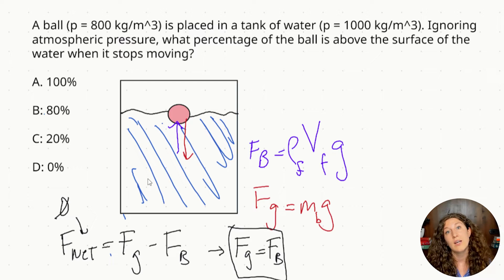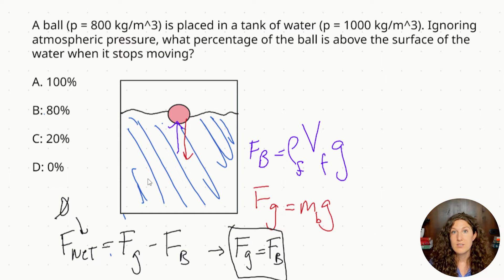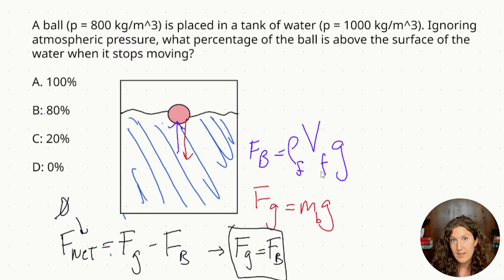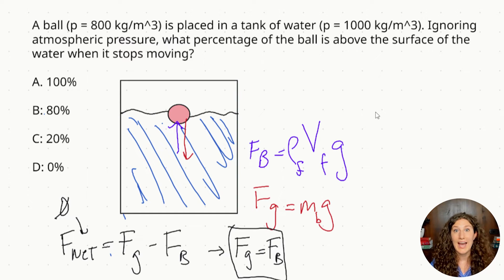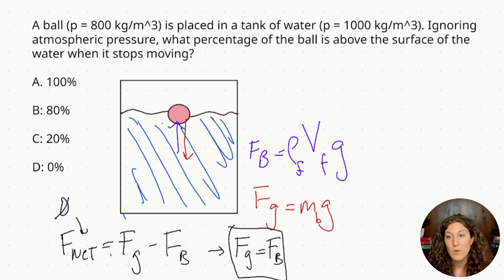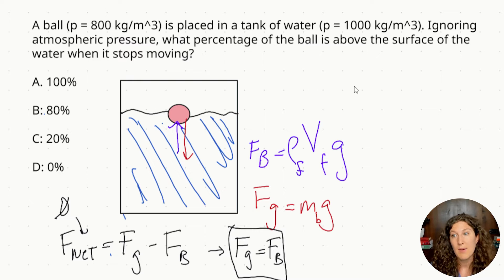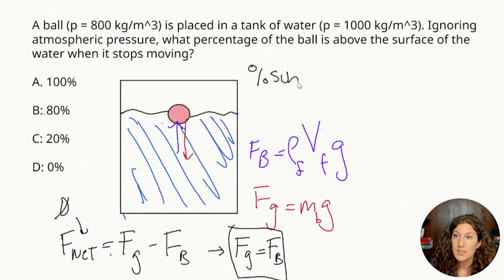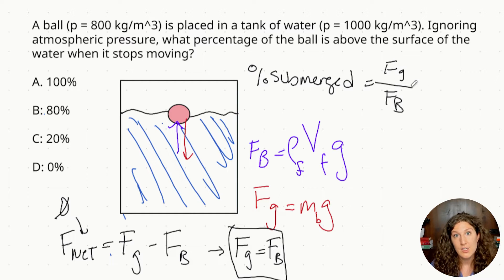Anytime we're at dynamic equilibrium, instead of subtracting the two forces, we can set them equal to each other because the net force equals zero. But we're still missing key pieces — we have the density of the object but not the mass, and the density of the fluid but not the volume of fluid displaced. Here's a useful rearrangement: the percent submerged can be set up as a ratio — the gravitational force over the buoyant force. This is the standard setup: gravitational force on top gives us percent submerged.